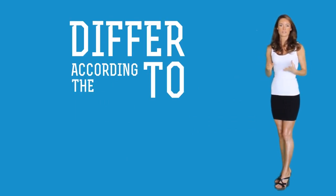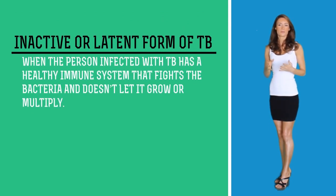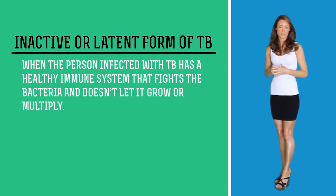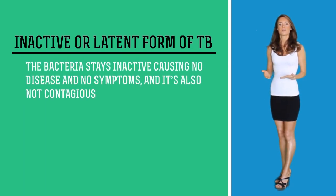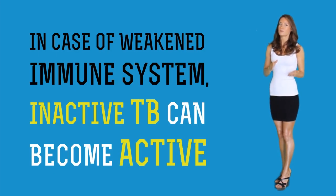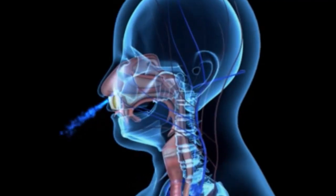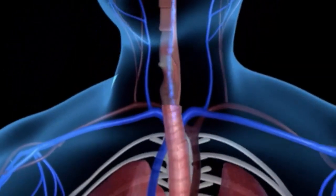Signs and symptoms of TB differ according to the type and stage of the infection. In the inactive or latent form of TB, the person is infected with TB but has a healthy immune system that fights the bacteria and doesn't let it grow or multiply. Hence the bacteria remains inactive, causing no disease, no symptoms, and is not contagious. If the person's health changes and the immune system becomes weakened, inactive TB can become active. When a person with a weak immune system is exposed to TB bacteria, the bacteria multiplies and grows, and active TB develops within a few weeks.